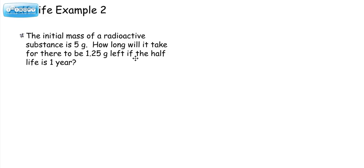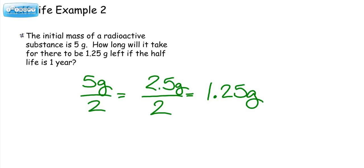So the easiest way to start this one is start with your original amount and figure out how many half-lives you have to go through. So divide by 2 gives you 2.5. So we're not there yet. Divide that by 2, and we get 1.25. So how many times do we have to divide by 2? 1 half-life, 2 half-lives. So it took 2 half-lives to get to 1.25 grams. Now, if the half-life is 1 year, then this took 2 years.